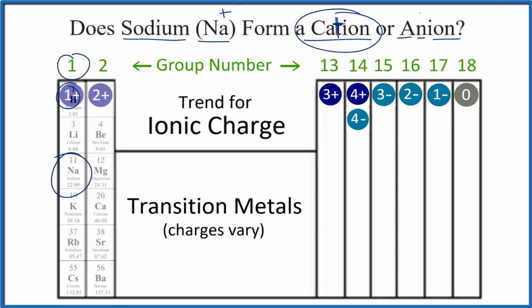What that means is sodium will lose one electron. Since electrons are negative, it loses that one electron and it becomes one plus. We write the ion — the cation — for sodium as Na+.